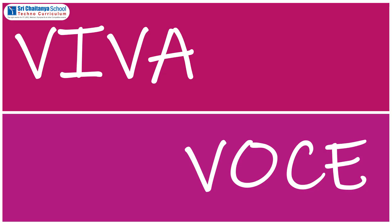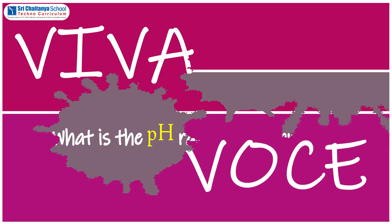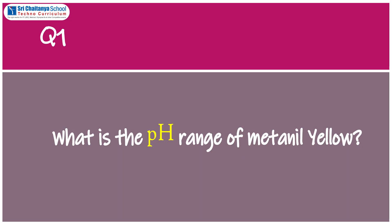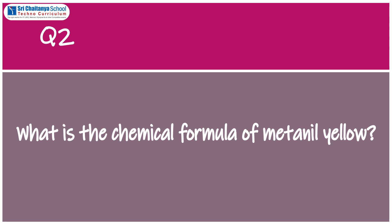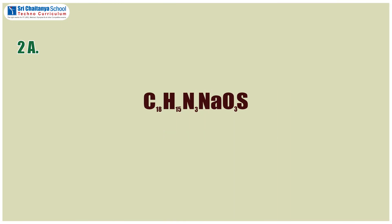Based on this experiment, I will ask a few questions. The first question is: What is the pH range of metanil yellow? The answer is 1.22 to 2.3. The second question is: What is the chemical formula of metanil yellow? The answer is C18H15N3NaO3S.